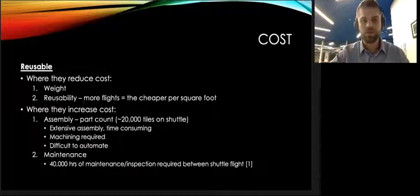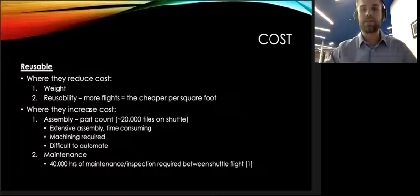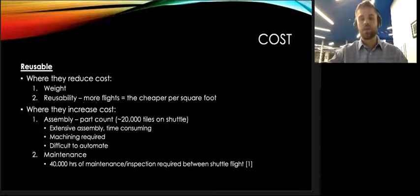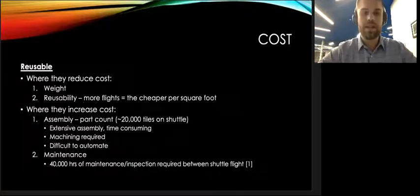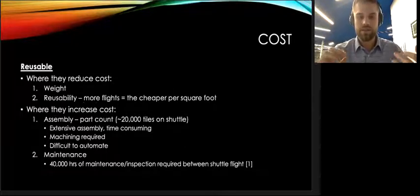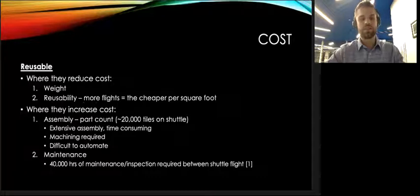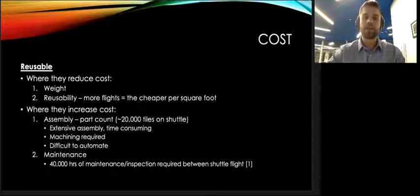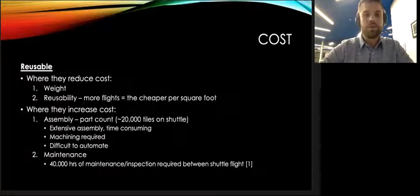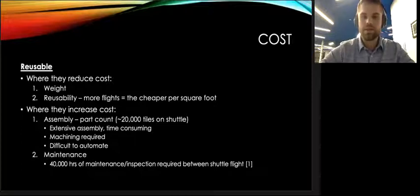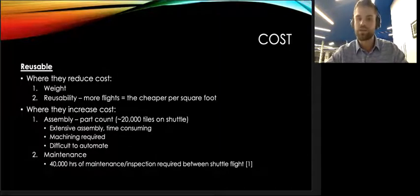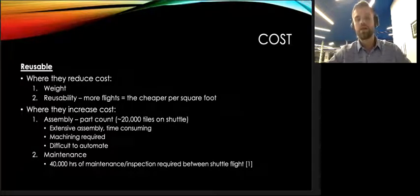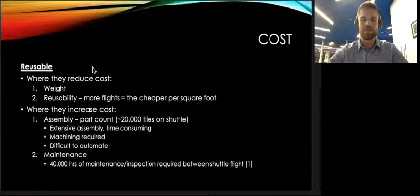Now, considering reusable thermal protection systems, they typically reduce costs in terms of weight since they are so lightweight, and reusability. The more flights will allow you to distribute that initial cost over many different flights. However, they typically increase costs with assembly. They are very complex typically, such as the space shuttle having 20,000 tiles. It required extensive assembly and testing. Maintenance was difficult and it is not an easy process to automate. In addition, maintenance also adds to the cost. They are reusable, but between flights, they do require inspection and other maintenance, such as waterproofing. The shuttle on average required 40,000 hours, and that significantly added to the cost of the thermal protection system.